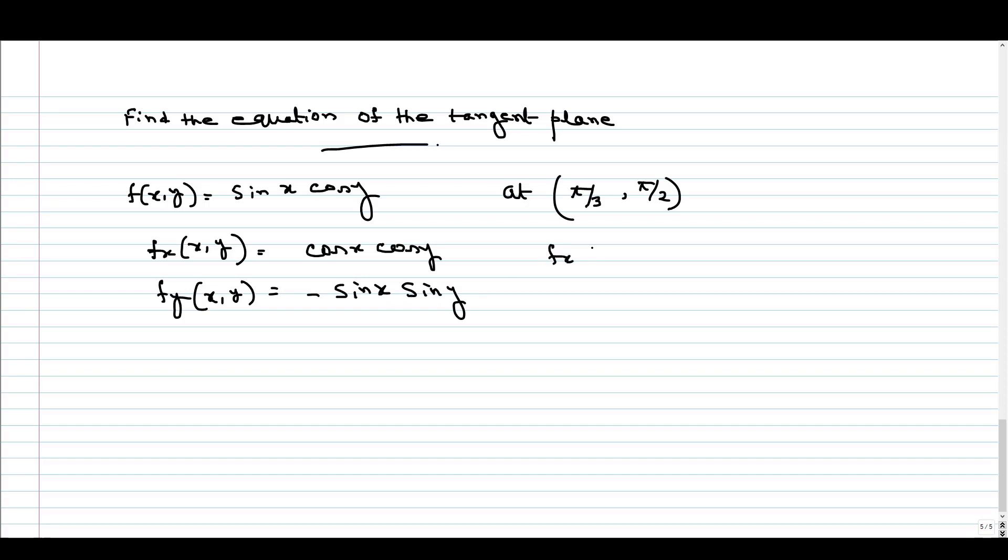f_x at (π/3, π/2) equals 0 since cos(π/2) is 0. f_y at (π/3, π/2) equals -sin(π/3)sin(π/2). Since sin(π/2) is 1 and sin(π/3) is √3/2, this gives us -√3/2.